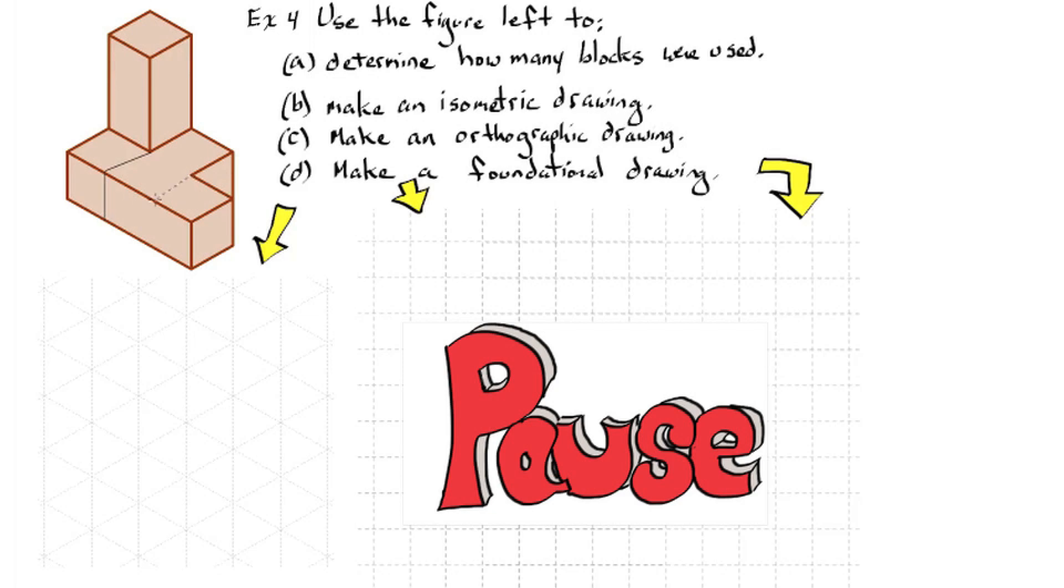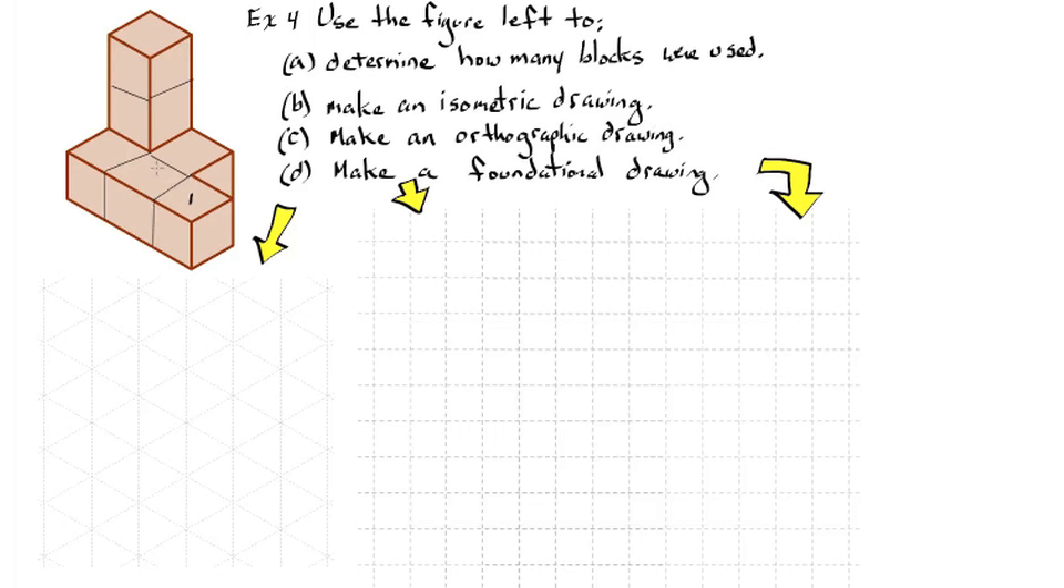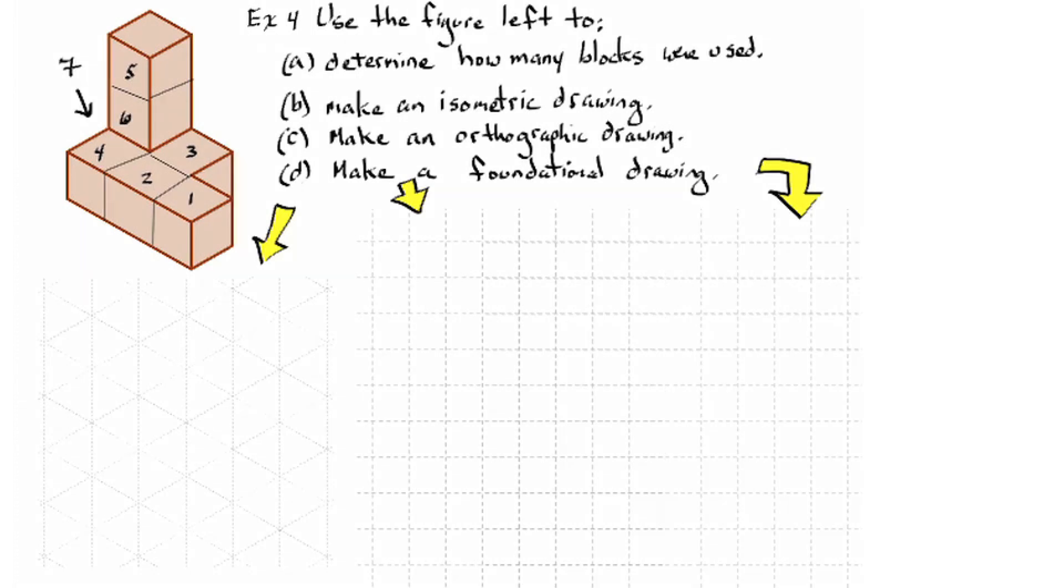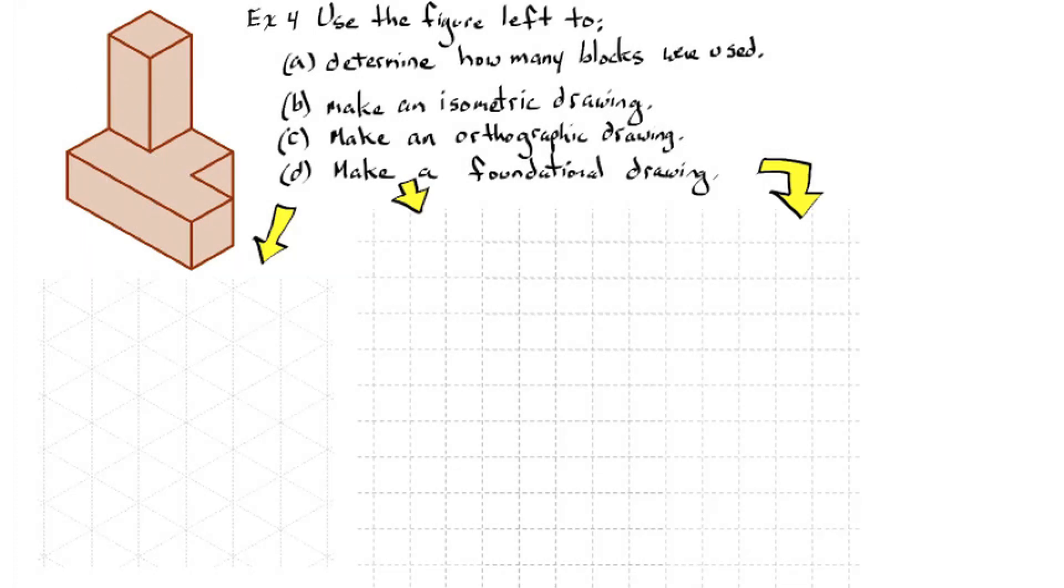Okay, so let's figure out how many blocks were used. One, two, three, four, five, six. And then there's a hidden seven behind there. Seven blocks.